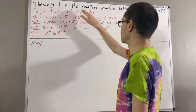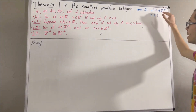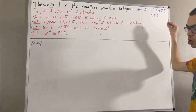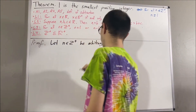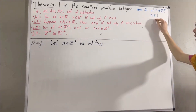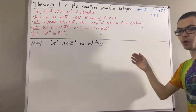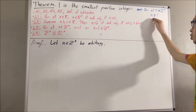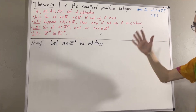To prove one is the smallest positive integer, we want to prove that for all positive integers n, n is greater than or equal to one. Let's give ourselves an arbitrary positive integer n. The goal is to show n is greater than or equal to one, and we'll split this into two cases: either n is equal to one, or n is not equal to one.